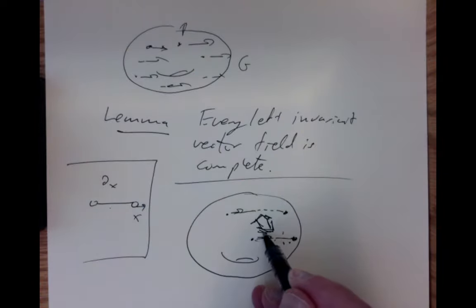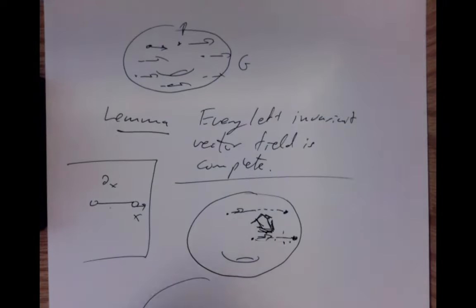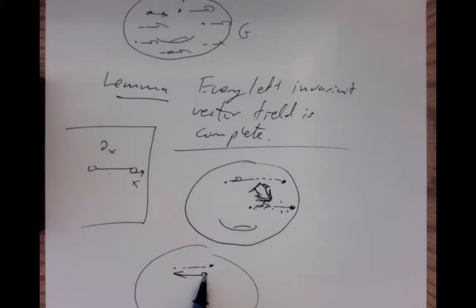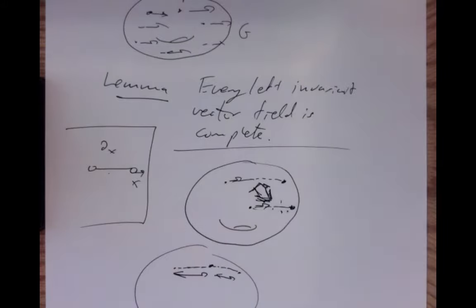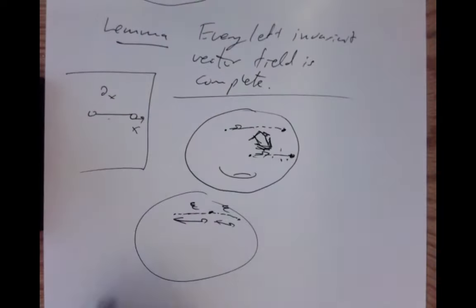No matter where you are, you still have just as much time left to keep flowing as you had before. If there's some time epsilon during which the flow is defined from this point, there's the same time epsilon for which it's defined from that point, and so on. You keep adding up epsilon plus epsilon plus epsilon and so on to infinite time. So that shows that the vector field is actually complete.